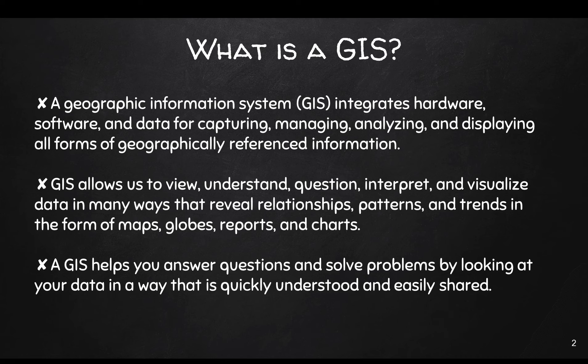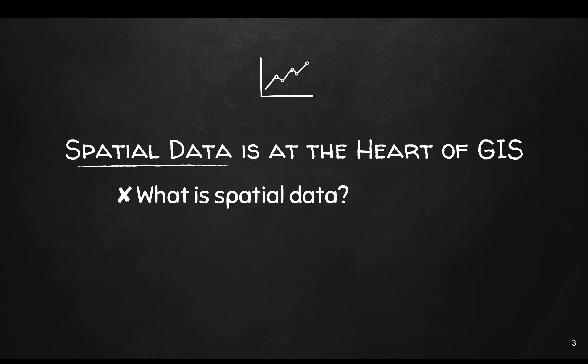A component of GIS includes the hardware, software, and the user. Spatial data are data that have a spatial component, which means that it's data that is connected to a place on the earth.